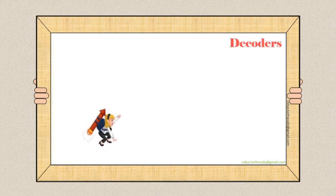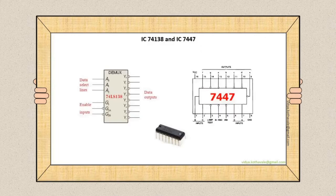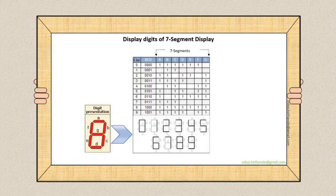Let's have an overview of decoders. The most popular decoder ICs are 74LS138 and 7447.